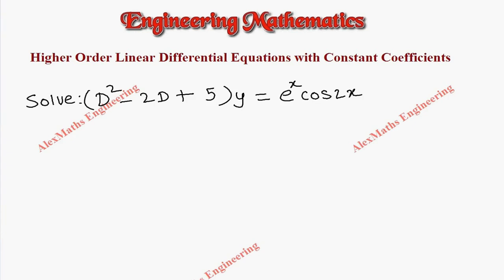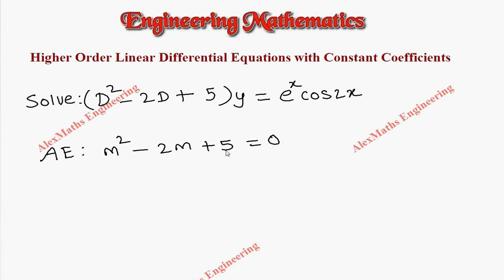Hi students, this is Alex here. In this video we are going to solve a problem where the question is: (D squared minus 2D plus 5) y = e^x cos(2x). First, we have to write the auxiliary equation. In the auxiliary equation we have m squared minus 2m plus 5 equals 0.